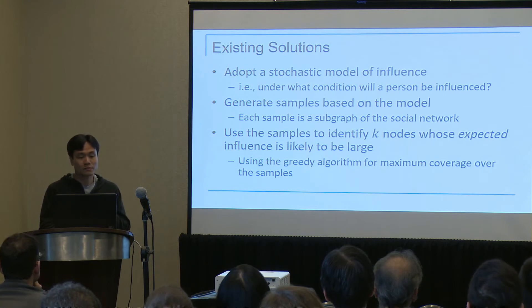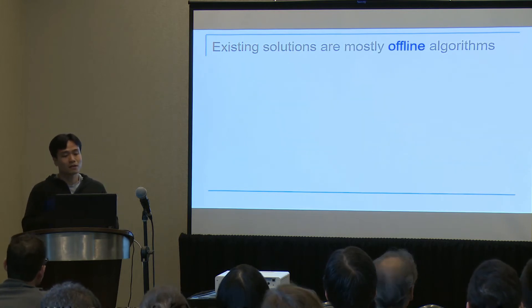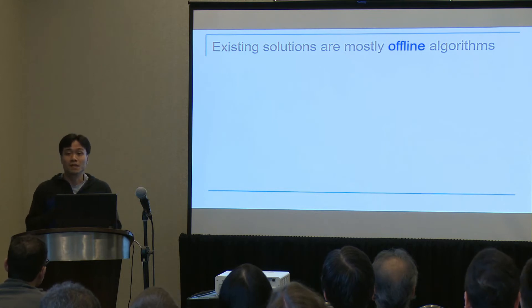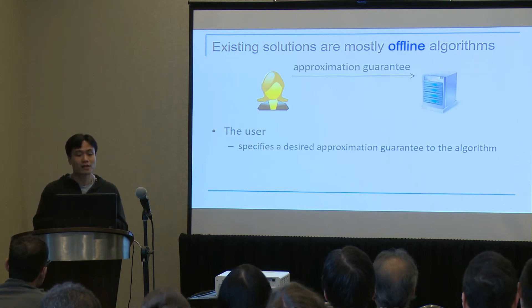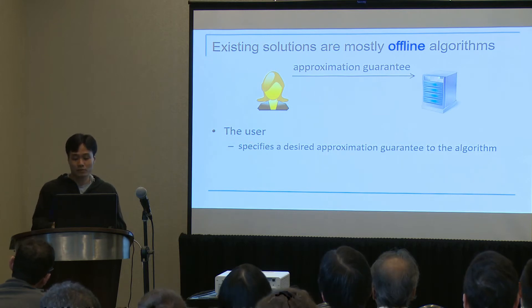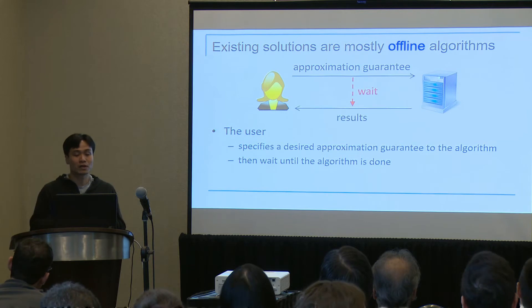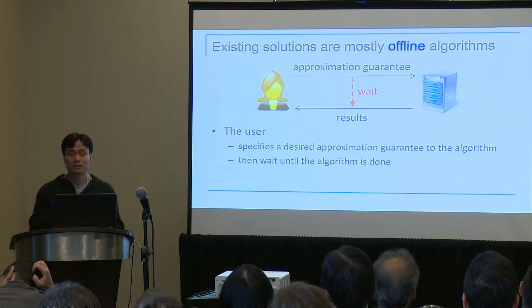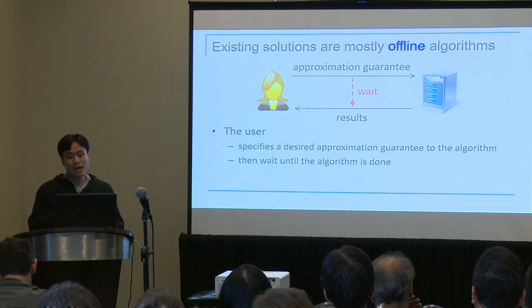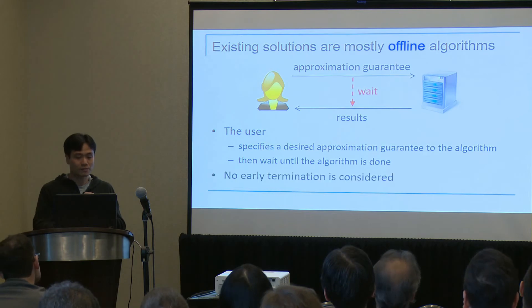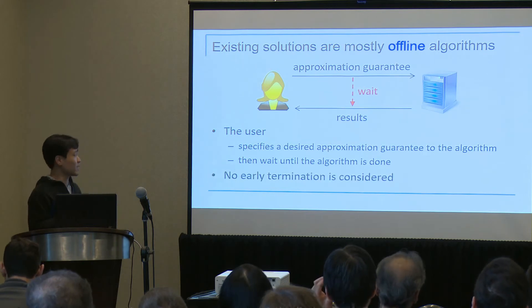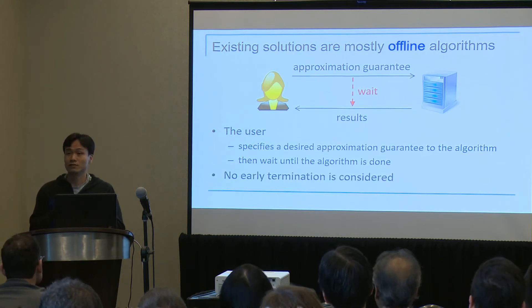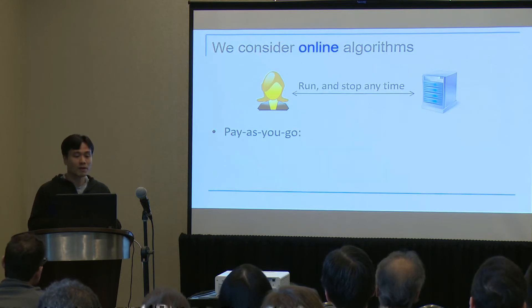There are many solutions based on this paradigm, but there is one issue: they are mostly offline algorithms. That is, the user would specify an approximation guarantee to the algorithm, and then the algorithm would just run until it finishes. The process is not interactive — the user would not get any feedback during this potentially long wait, and if the user becomes impatient and wants to terminate early, she would not get much useful result.